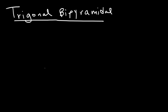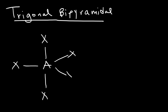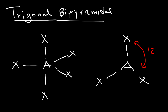This structure has a central atom with five other atoms attached to it — one on top and one on the bottom. The bond angle between those two atoms is 180 degrees. There are three other atoms that form a trigonal planar shape, and if you focus on those three atoms, the bond angle between them is 120 degrees.